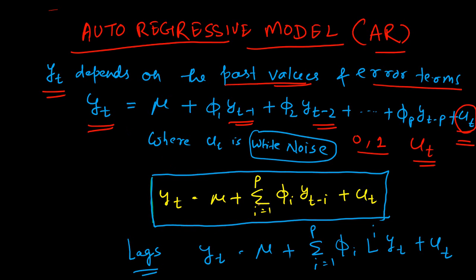We can use the summation operator to write the AR model in a more mathematical form. Yt is given by a constant — which can be 0 many times and is sometimes ignored — plus a summation from i equal to 1 to p of a parameter multiplied by the lags. We do not know exactly what p is; p could take values of 1, 2, up to infinity. We also have the error term.